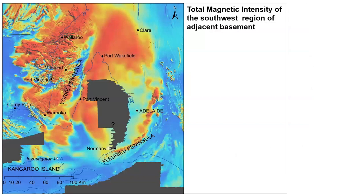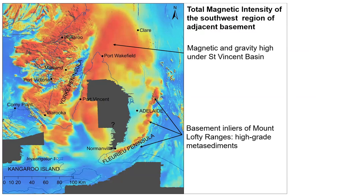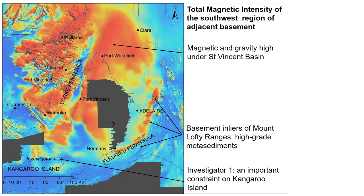Moving to the southwestern area adjacent to the Adelaide Superbasin — what does the basement look like there? We have a magnetic and gravity high that sits under the St Vincent Basin, which has never been intersected so we really don't know what it is. We have basement inliers in the Mount Lofty Ranges consisting of high-grade metasediments, and an important drill hole — Investigator 1 on Kangaroo Island — which provides some important constraints.